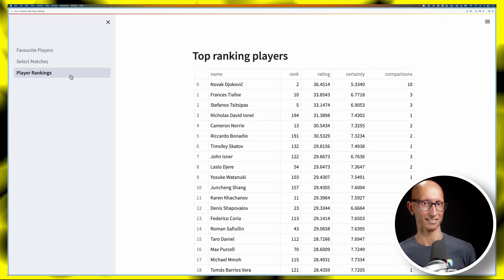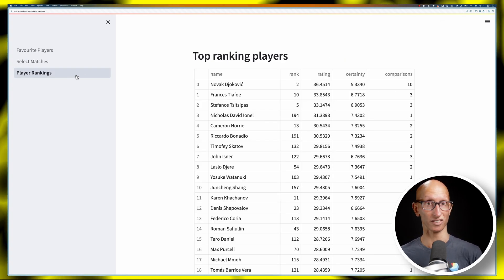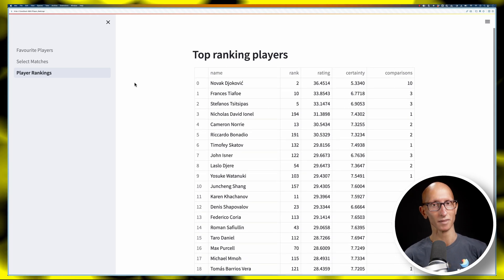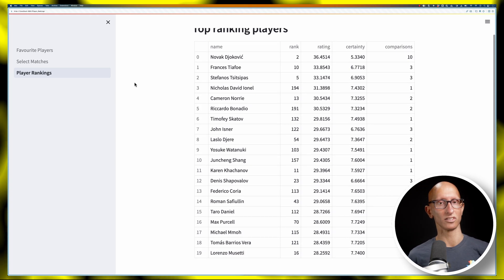So you can see we've got Djokovic at the top, Thiem in second, Tsitsipas in third, and if we did it more times we would see those rankings change. I'll put a link to the code in the description.